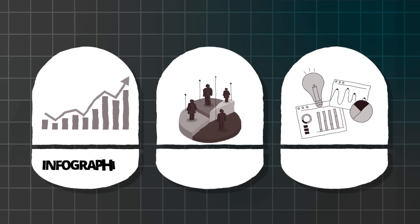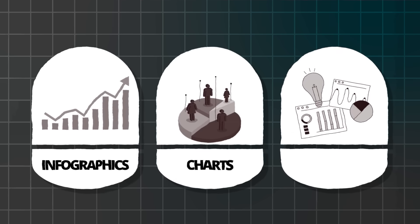I discovered that Venngage's AI statistics generator doesn't just create basic charts — it creates professional-looking statistical graphics that make your data tell a compelling story. We're talking about infographics, interactive charts, and data visualizations that look like they came from a professional research company, but you can create them in minutes, not hours.